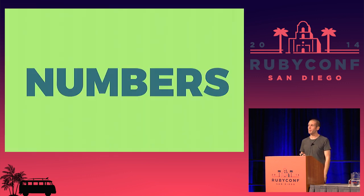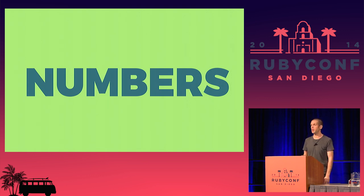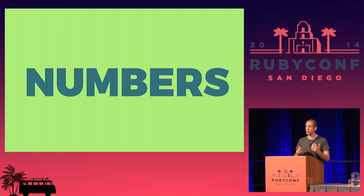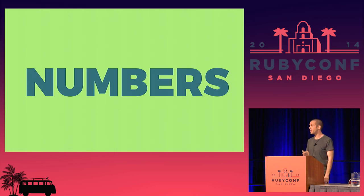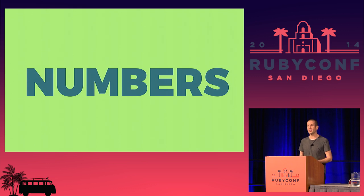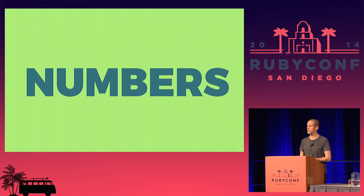Let's begin by talking about numbers. Numbers seem obvious and natural to us, but they have no independent existence. They're a human invention, a human technology designed by us to solve problems we have. There was a point in our cultural history where we had no concept of numbers, but then we created them and gave ourselves a new and powerful tool for categorizing, understanding, and predicting the real world.